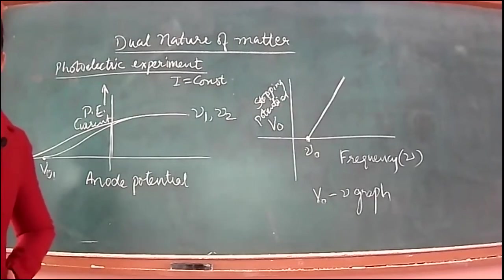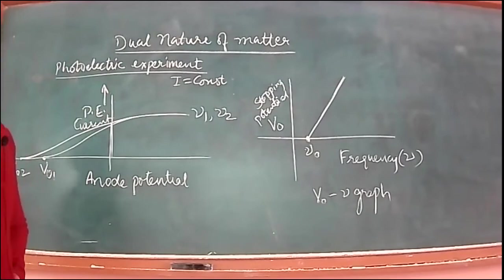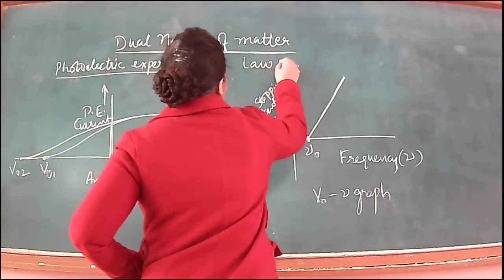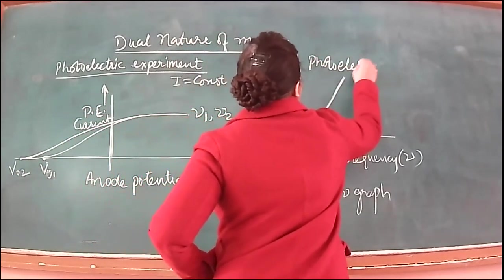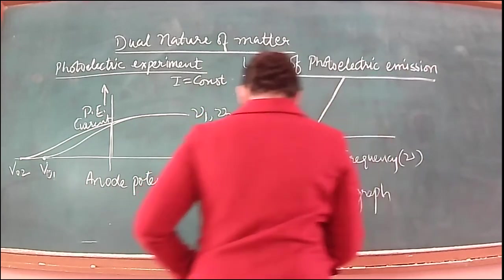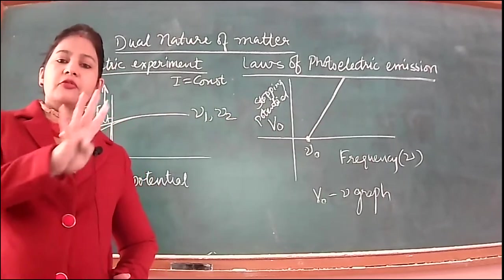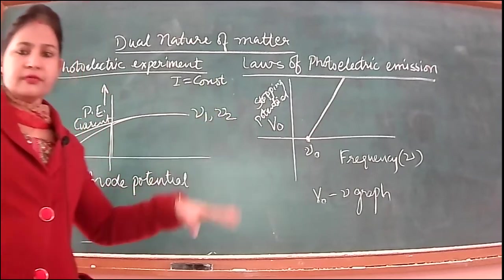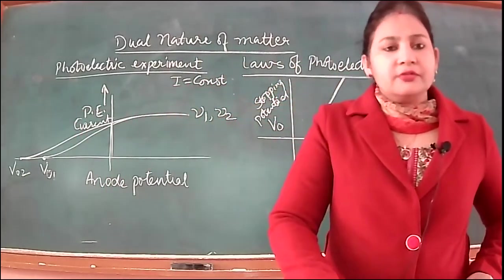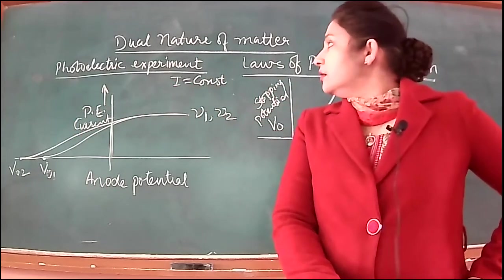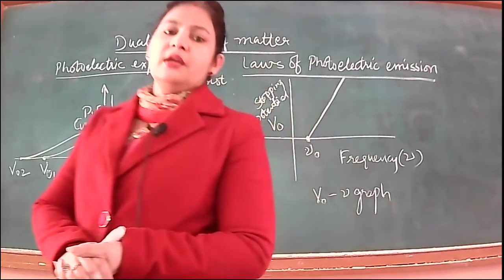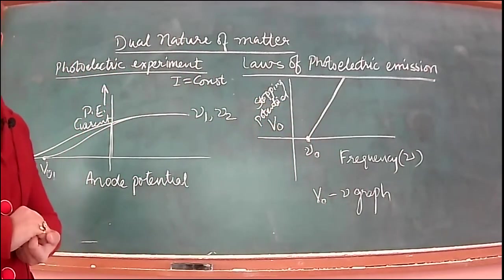These were the various observations of Lenard. On the basis of these observations, laws of photoelectric emission were stated. There are four laws. First law: below threshold frequency, no photoemission takes place — no photoelectric effect takes place.